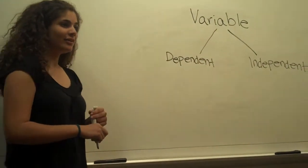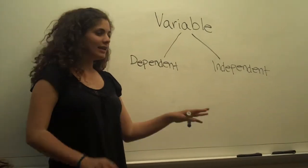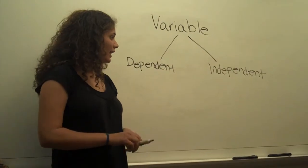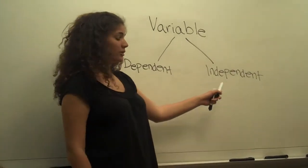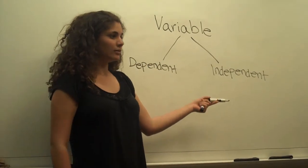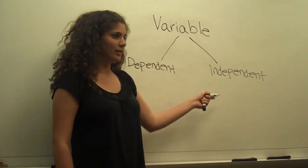An independent variable is a variable that is not impacted by anything else going on in the experiment. And generally speaking, this is the variable that the scientist can control. So I can determine how long my experiment goes for. So time would be an independent variable in that case.